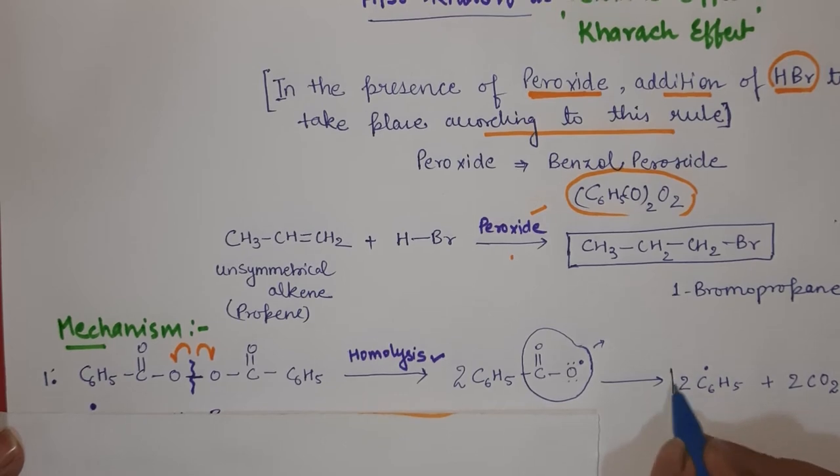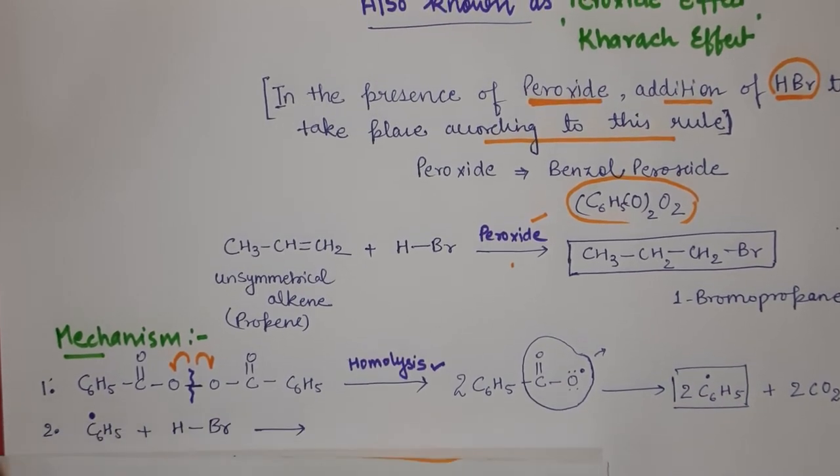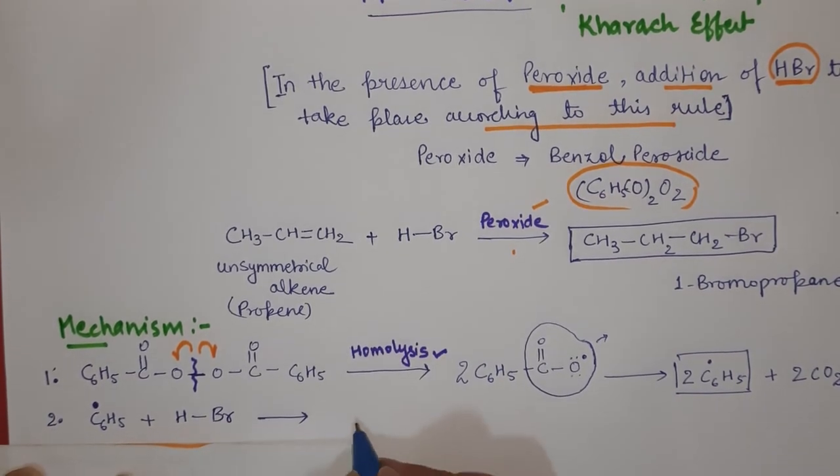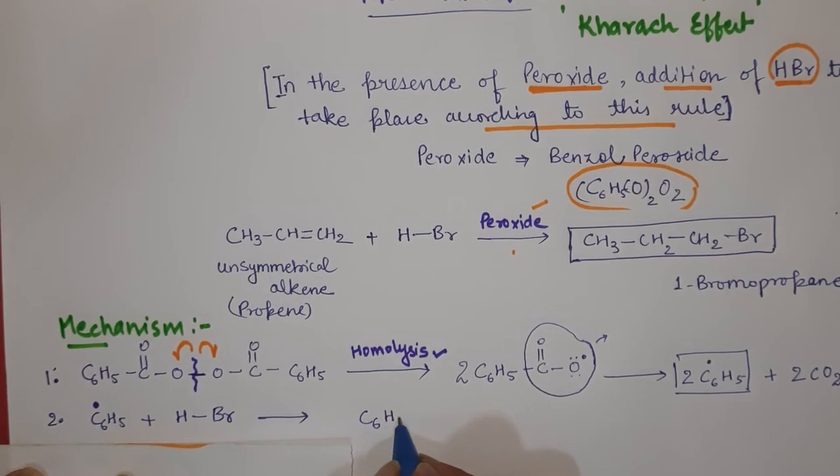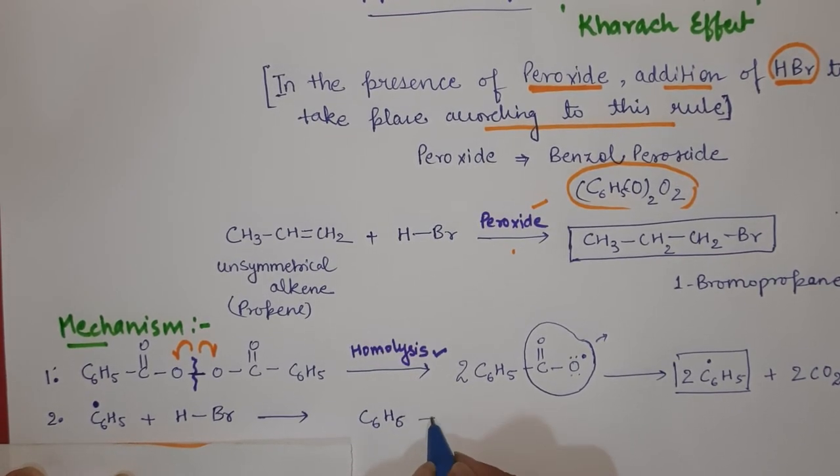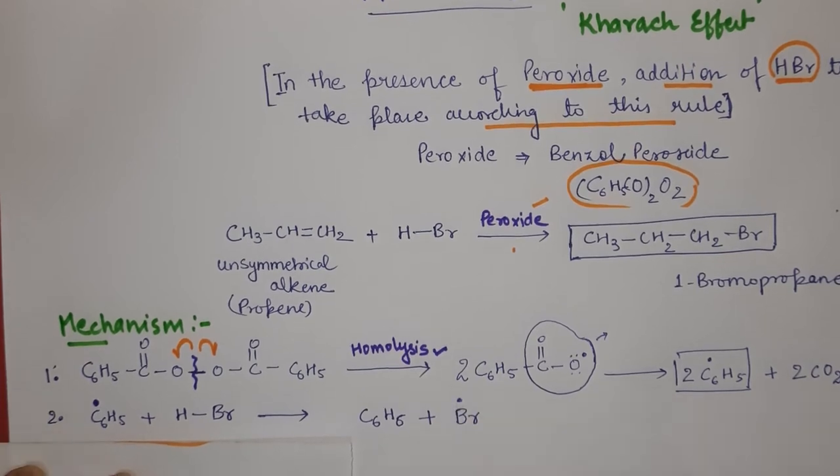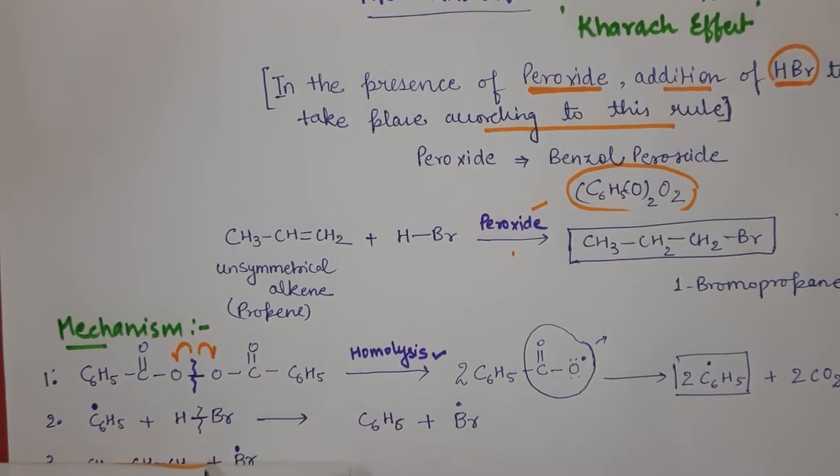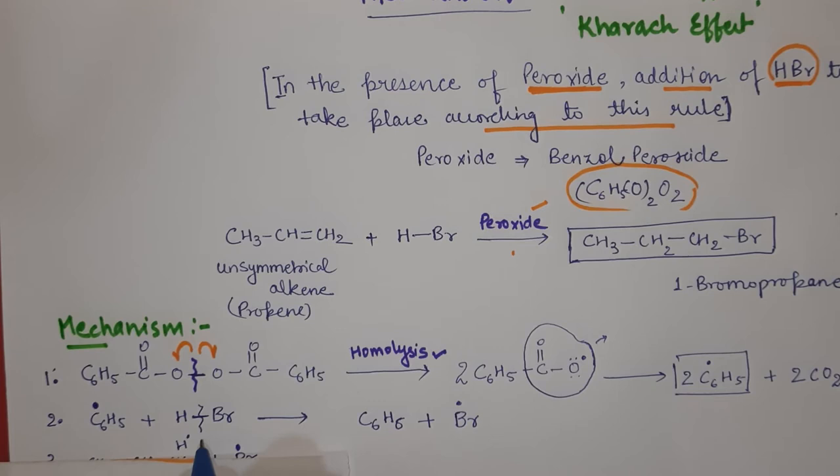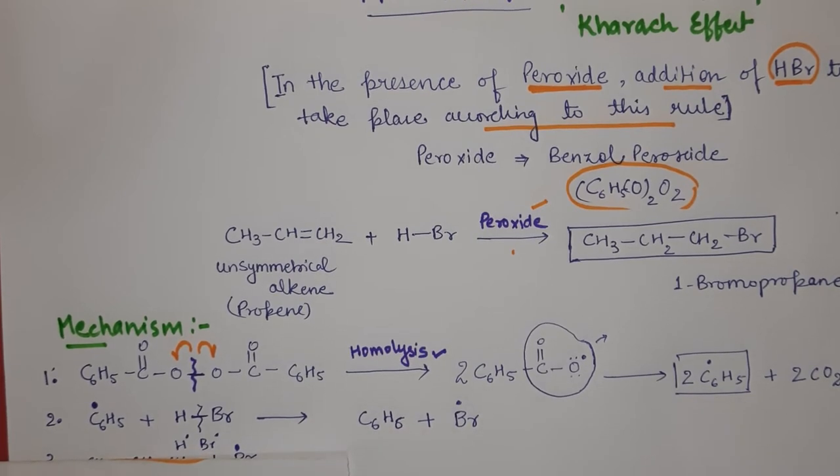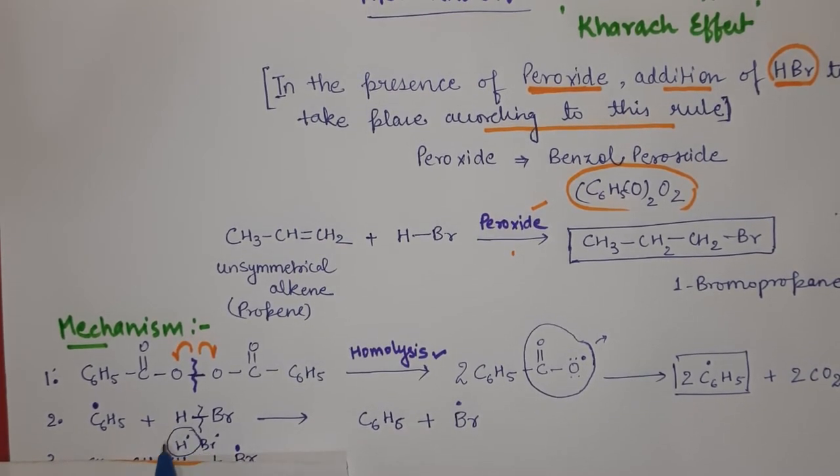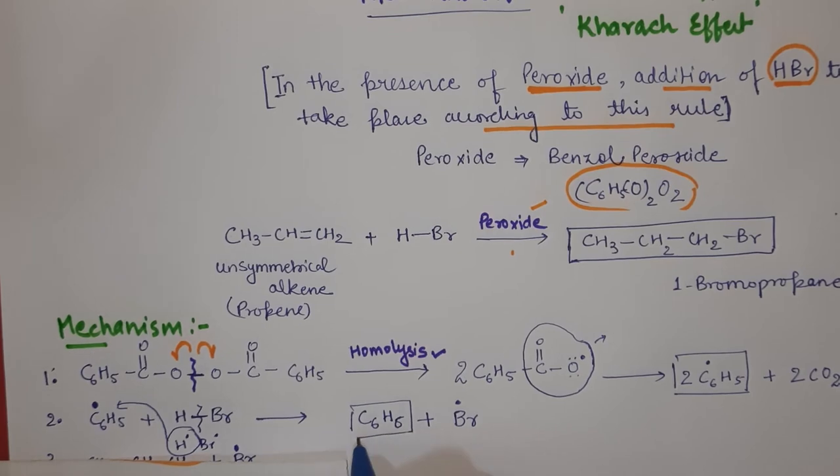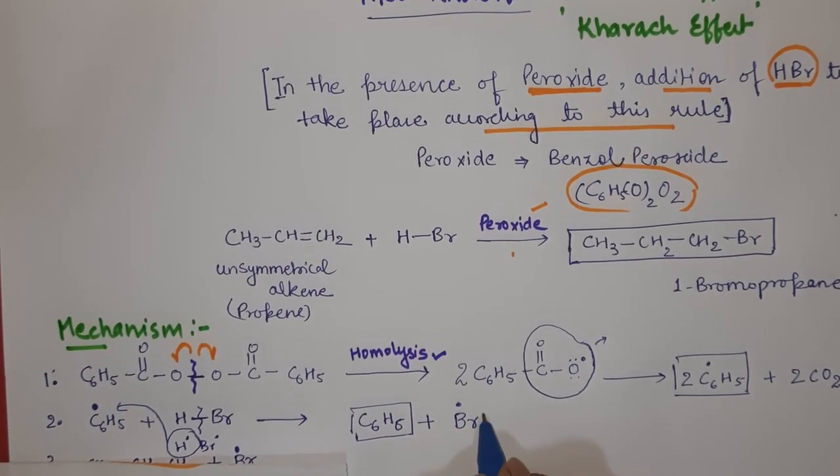Now this radical reacts with HBr and forms C6H6 plus Br radical. How it formed: again there is a homolysis of this bond that takes place and we get H radical and Br radical. This H radical gets attached to this group and forms a bond and converts itself into C6H6 benzene.